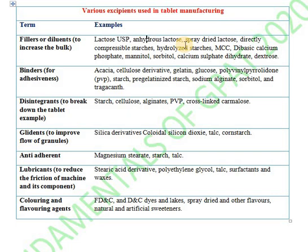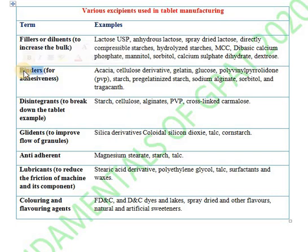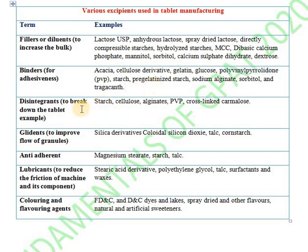The next excipient is binders, also known as binding agents. They are mostly used in granulation during tablet manufacturing, including dry granulation. They act as adhesive compounds, keeping the powder in binding form. Examples include acacia, cellulose derivatives such as microcrystalline cellulose, ethyl cellulose, methyl cellulose, gelatin, glucose, PVP (polyvinyl pyrrolidone), pre-gelatinized starch, sodium alginate, sorbitol, and tragacanth.